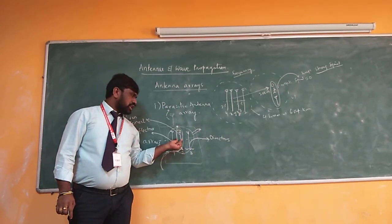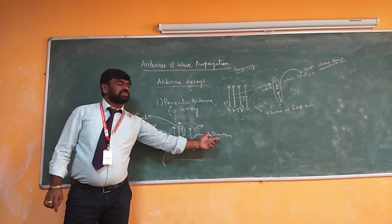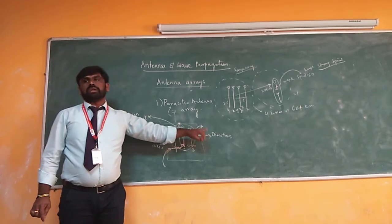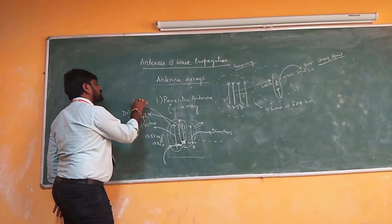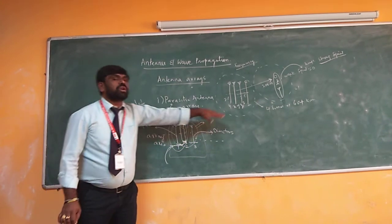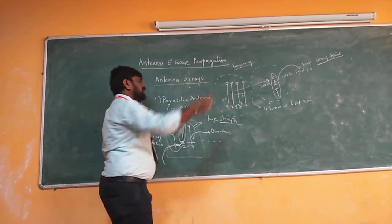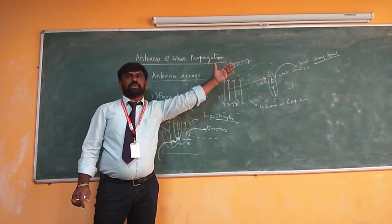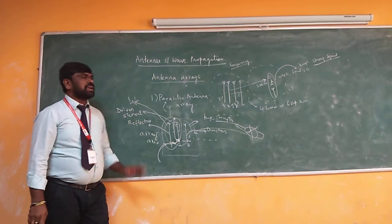The basic parasitic antenna has one reflector, one driven element, and one director. The number of directors can be increased, whereas the number of reflectors and driven elements cannot — there is always one each. If you want a stronger signal, you increase the number of directors. For a 60 km signal or satellite communication at 100 km, you simply increase your number of directors.